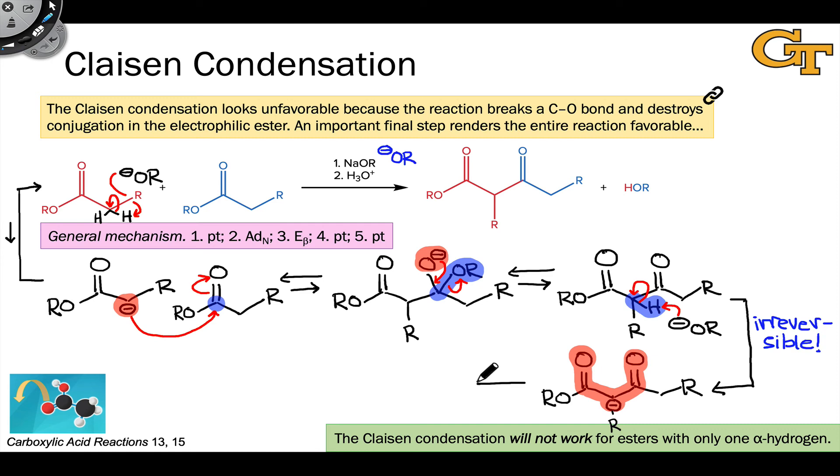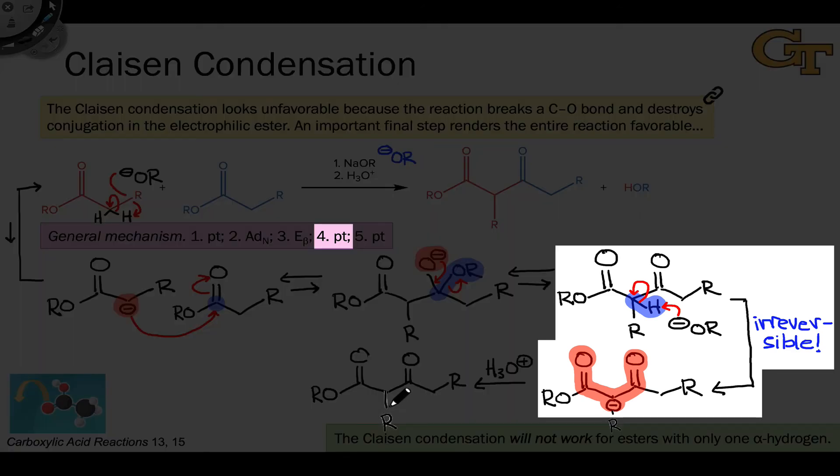This point is actually the end point under basic conditions. If we want to isolate the neutral beta-ketoester product from here, we have to use acidic workup. Treatment of the reaction mixture with an acid protonates that central alpha carbon and gives us the neutral beta-ketoester product. Because it's that fourth step, the proton transfer, that really drives this reaction forward.